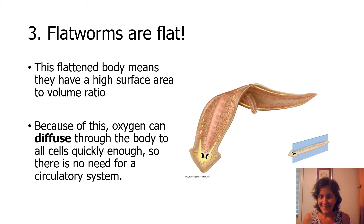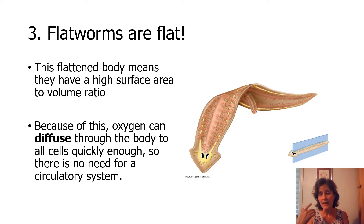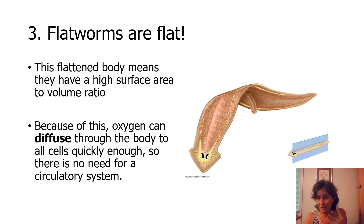They are called flatworms because they are flat. That flattened body means they have a really high surface area to volume ratio. The question on your handout under 3A is how do flatworms get the oxygen they need to every cell, because they lack a circulatory system — which is also true for cnidarians and sponges. These are primitive enough organisms that they don't have complicated organ systems. They have enough surface area to diffuse oxygen through their body to every single cell fast enough to survive.